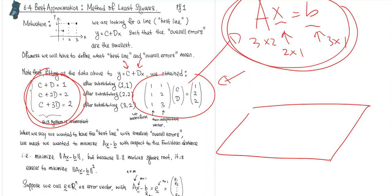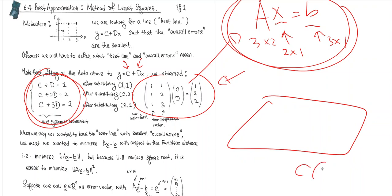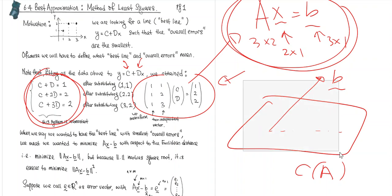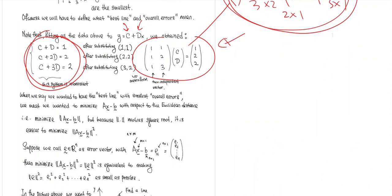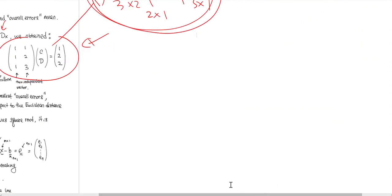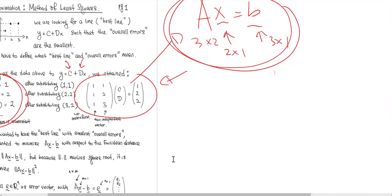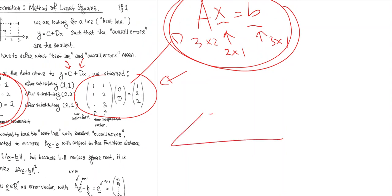If you could solve the system, that would mean you could find a straight line passing through all three points — but we know that's not possible. So this system is actually inconsistent; it has no solution. We know from before that whether Ax = b is consistent depends on the column space: your b is not on the column space of A, it is away from it. The column space doesn't necessarily have to be a plane — this is just a graphical representation to make things conceptually easier.